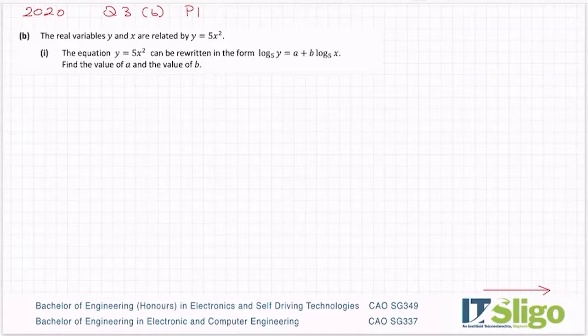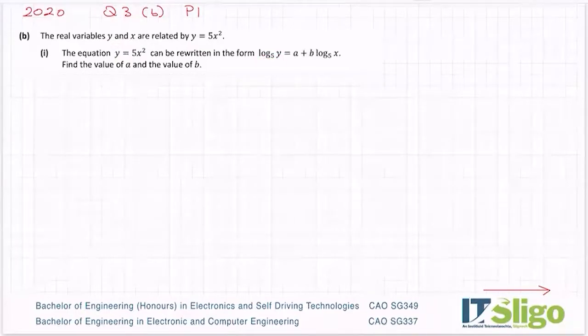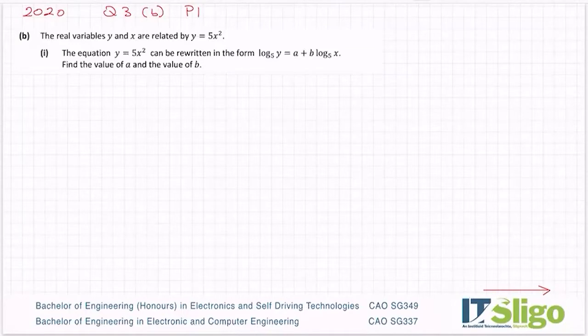The equation, the real variables Y and X are related by Y equals 5X squared. The equation Y equals 5X squared can be rewritten in the form log to the base 5 of Y equals A plus B log to the base 5 of X. Find the value of A and the value of B.